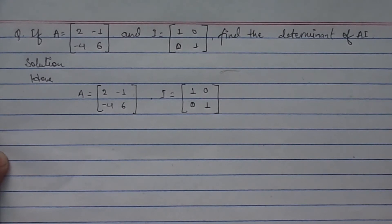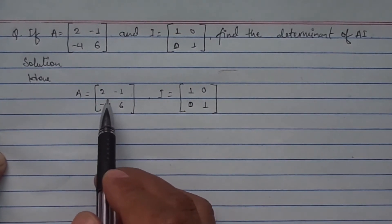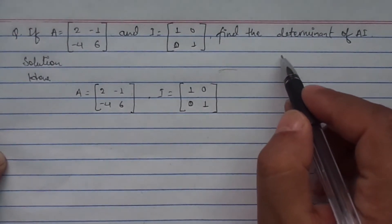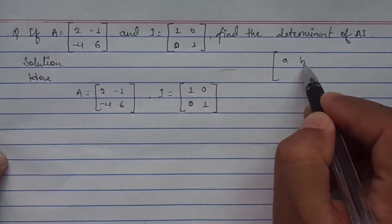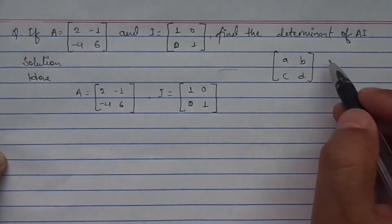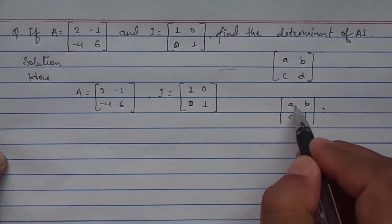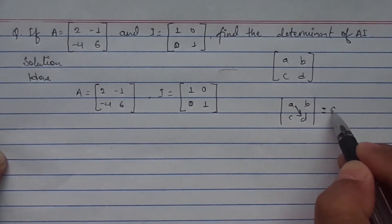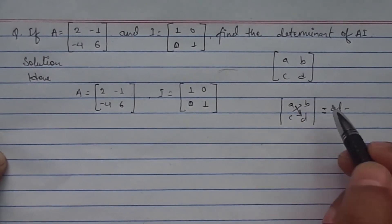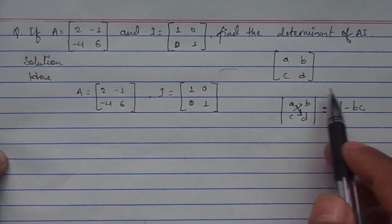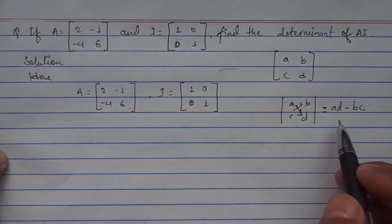In this question, first of all we need to find the product of A with I, and then we need to find the determinant of the resultant matrix AI. If we suppose a matrix as [a, b; c, d], its determinant is obtained by multiplying the diagonal elements: a·d minus b·c. The determinant of any square matrix, especially a 2×2 matrix, can be obtained using this method.